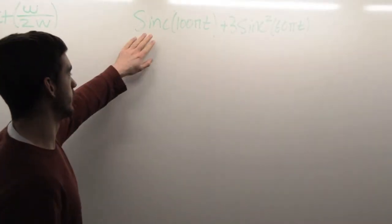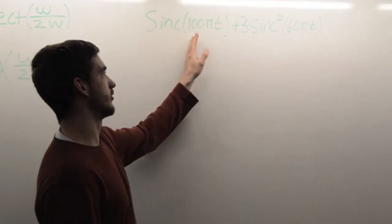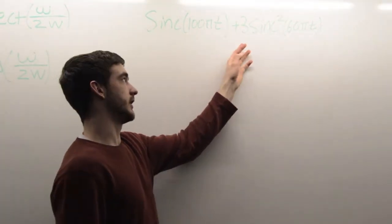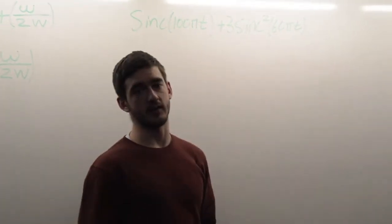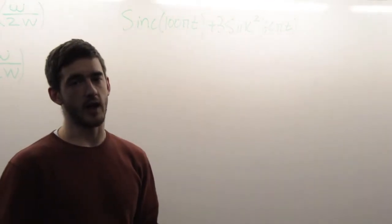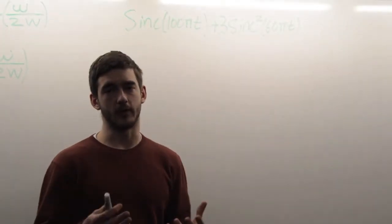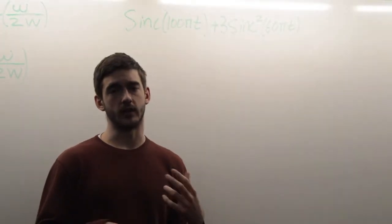We're given this function: sinc of 100 pi t plus 3 times sinc squared of 60 pi t, and we're asked to find what our sampling rate should be and what our sampling interval should be.